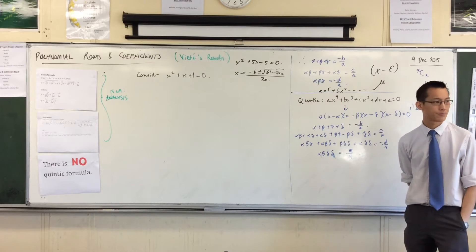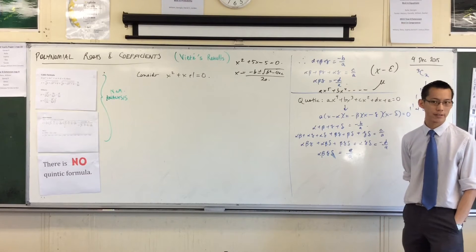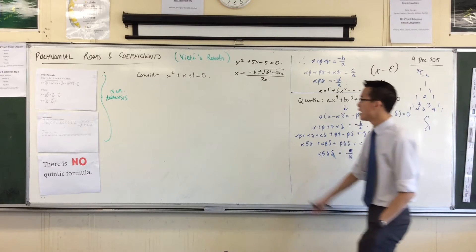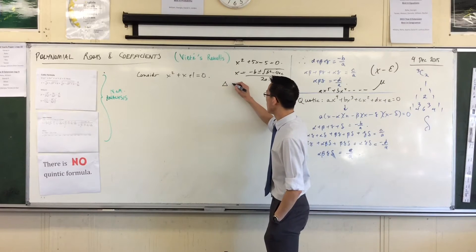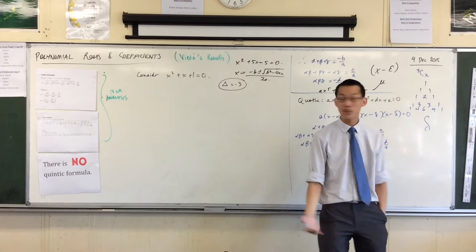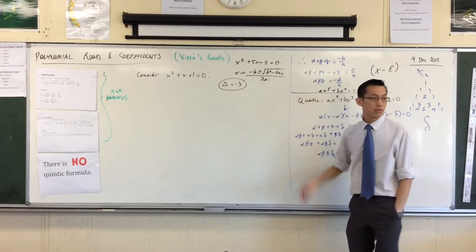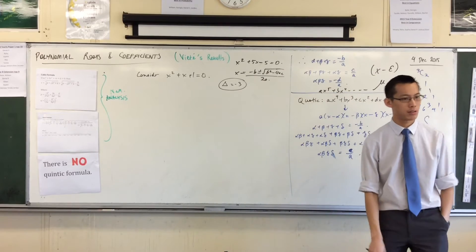Tell me the discriminant of this quadratic. 1 minus 4? It's negative 3. The discriminant is negative 3. So being that the discriminant is negative 3, it's less than 0, so when you launch into this guy, there's the discriminant there, b squared minus 4ac. You get no real solutions.